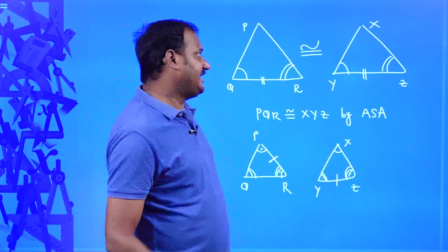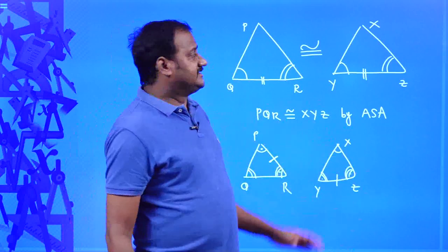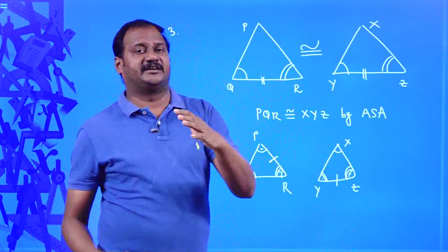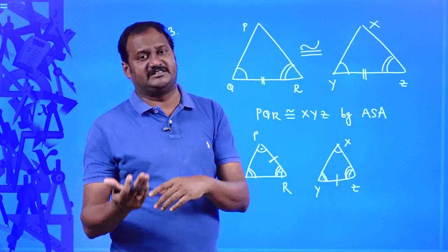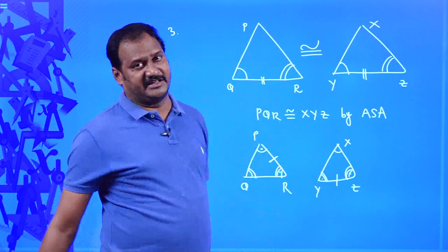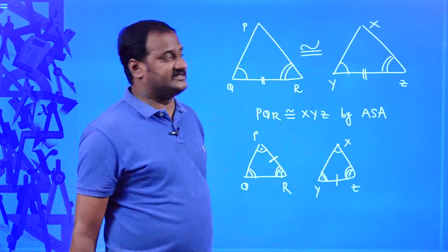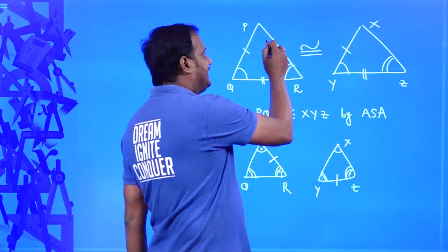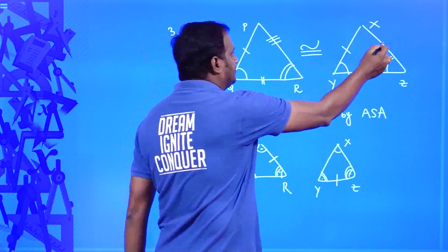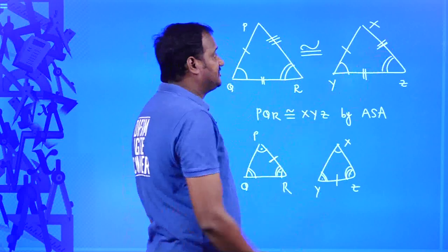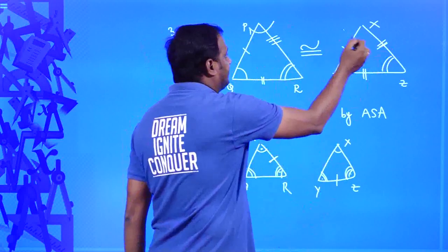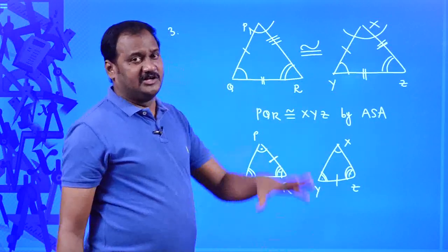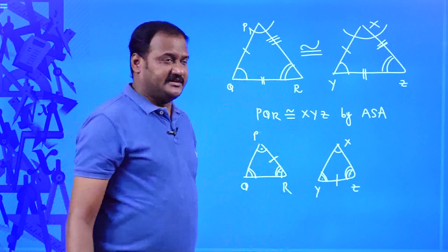By CPCT, since the two triangles are congruent, all corresponding parts are equal: PQ equals XY, PR equals XZ, and the third angle is automatically equal to the third angle. CPCT is applicable for any pair of congruent triangles.